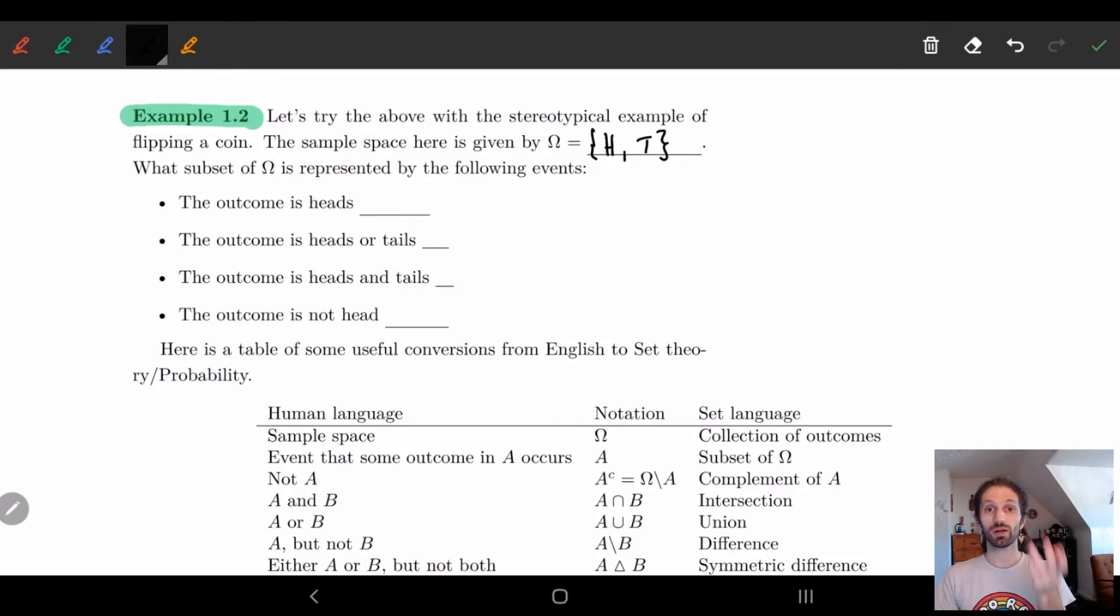So the question now becomes what subset of omega is going to be representative for the following four examples. The outcome is heads. Well, this is kind of easy. We just take heads as our subset. That's it. The outcome is heads or tails. So here we're going to have to think of union, right? So we should take the union of heads or tails. And so here, if you think about it, we have H and T, which is just omega. So this is a certain event. This is guaranteed to happen. We will either get heads or tails when we flip. That's it. There's no other options.